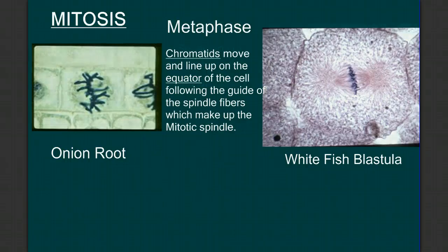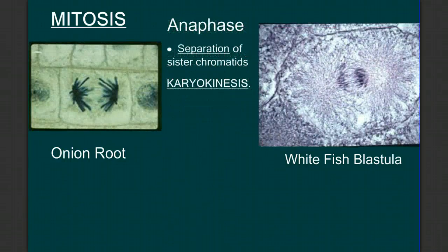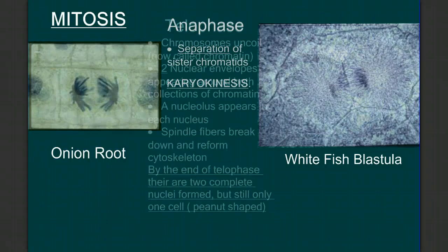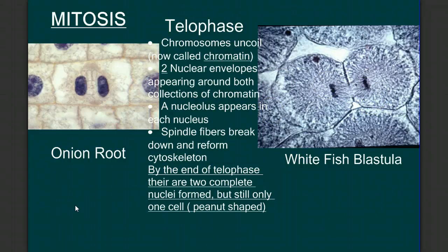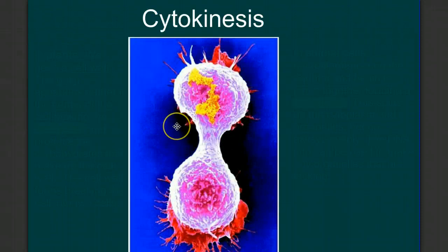From metaphase to anaphase, the sister chromatids pull apart — the separation of the sister chromatids, called karyokinesis. And from anaphase to telophase, we form two nuclei — two compartments around those collections of genetic material. By the end of telophase, again we have two nuclei but only one cell. Now that we've divided the replicated DNA into two separate nuclei, let's talk about how we divide this into two different cells, or cytokinesis.